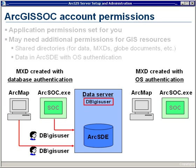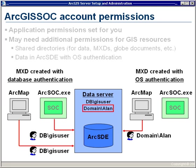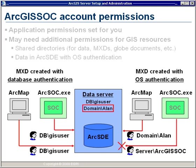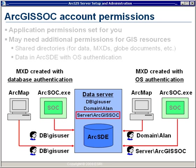In the next case, I want to connect to the data using OS authentication, meaning I'll connect to the database using my Windows login. Whenever you're establishing a new connection to the database, you need to make sure that login is a valid user in the database. Here you can see I've added the domain backslash Allen user to my database. When I connect in ArcMap using OS authentication, I have no problem making a connection and can add layers to my MXD. The tricky part is when I try to publish the MXD to ArcGIS Server. Since the connection uses OS authentication and the ArcSOC EXE runs as the ArcGIS SOC user, the service will not work since that login hasn't been added as a valid user to the database. Once you add that user and grant the necessary permissions, the service will work as expected.